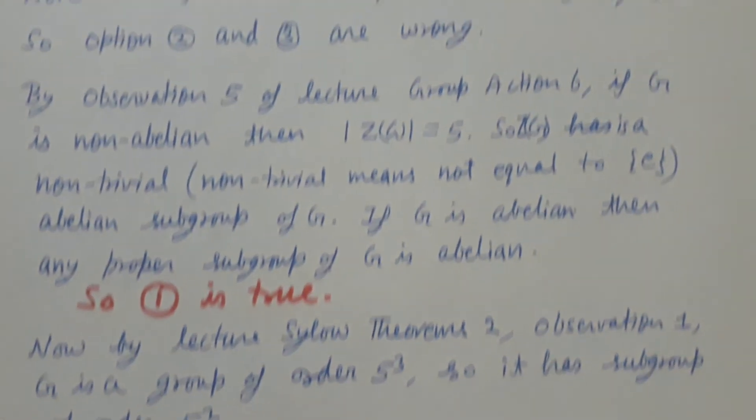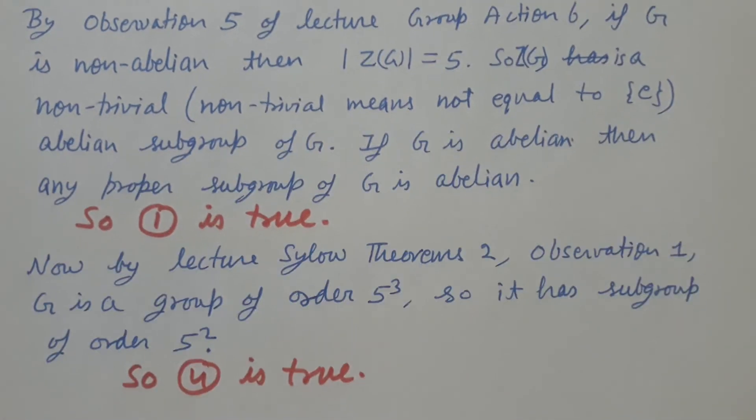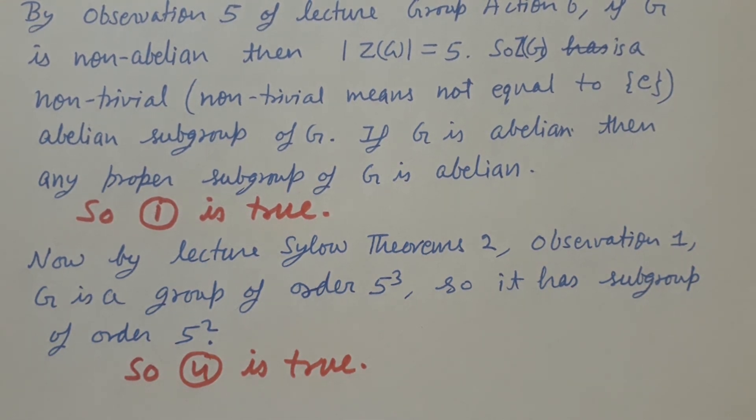The fourth option is also true: there is a subgroup of order 25. Hence, in this question, two options are true: option number 1 and option number 4. Thank you.